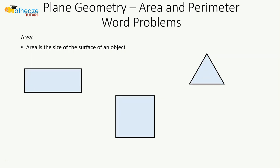The area is the size of the surface of an object, and the area is inside the object. The perimeter is outside of the object—the boundary of the object. The area is inside of the object—the surface of the two-dimensional object.